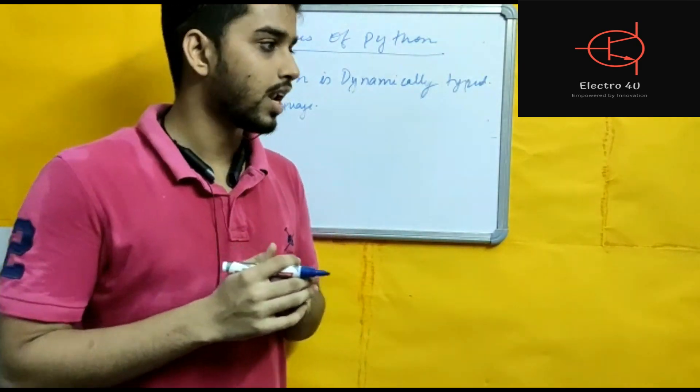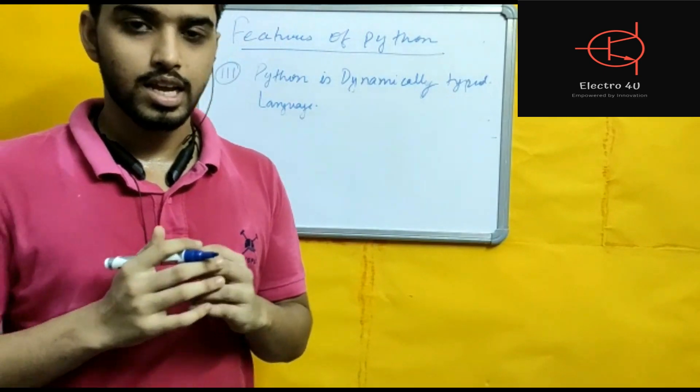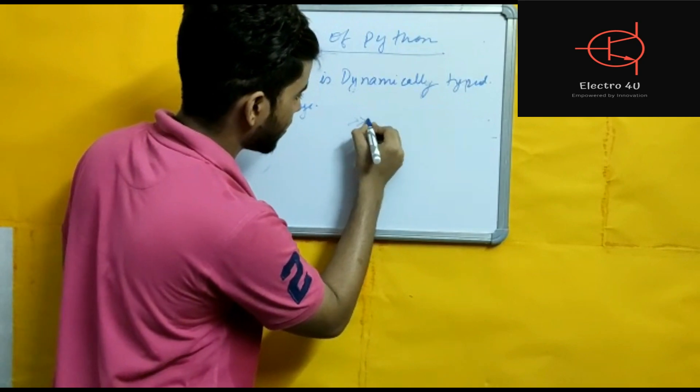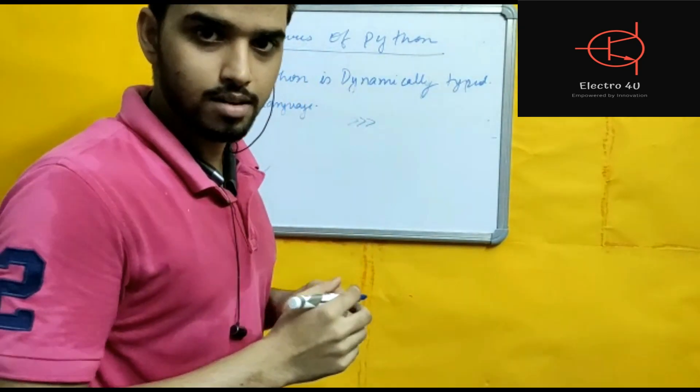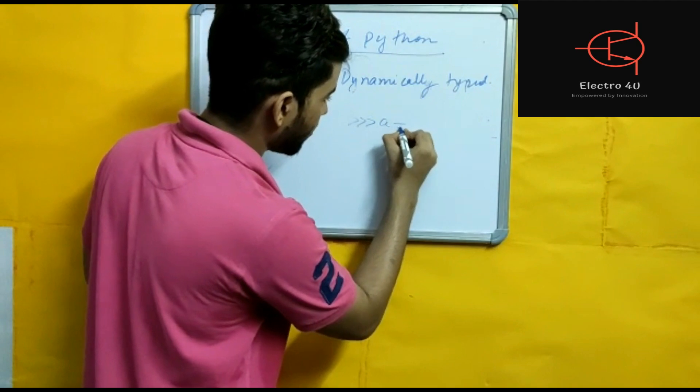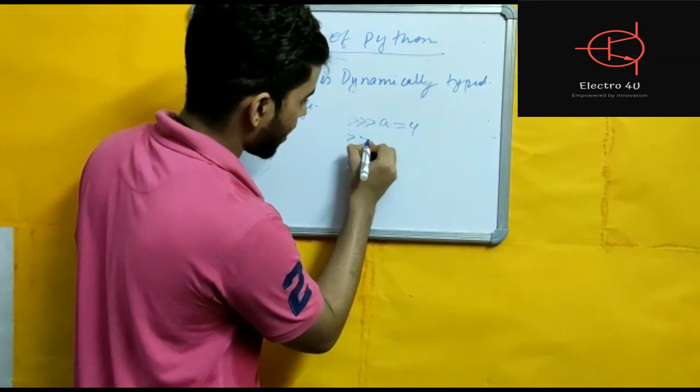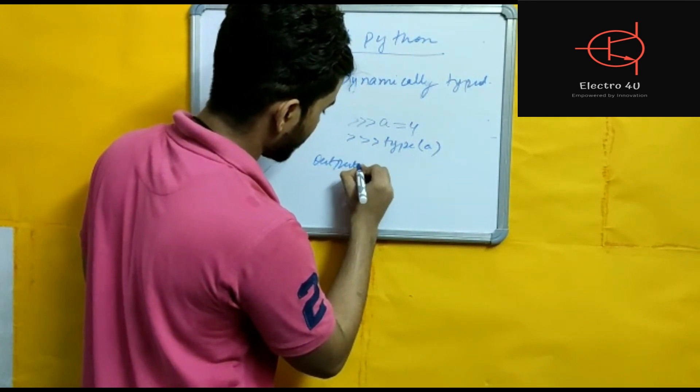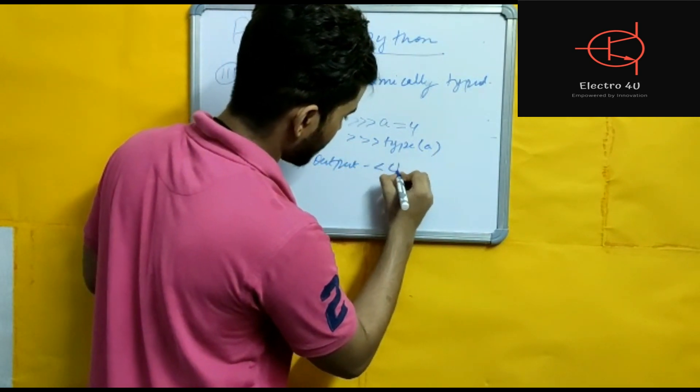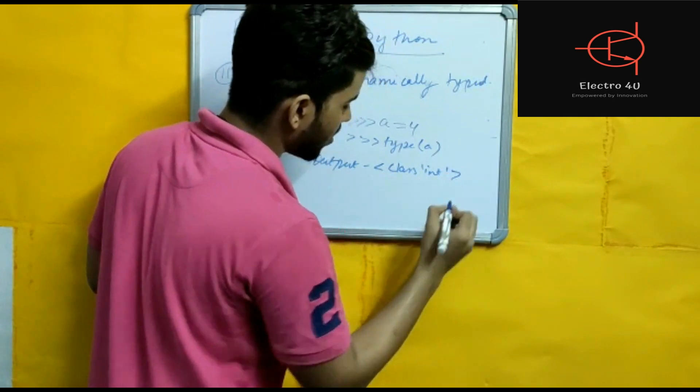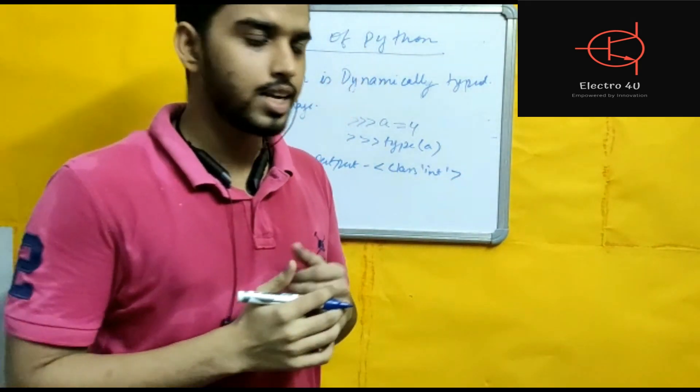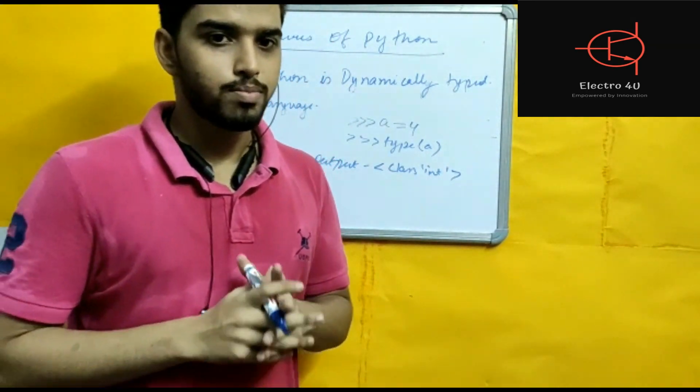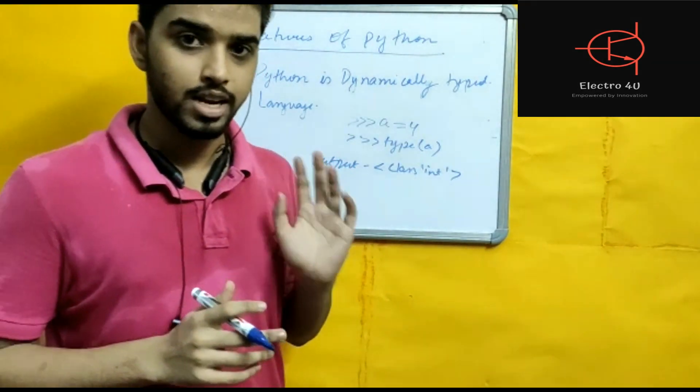The variable, we have to put the data types. Int is equal to 4, this is the example. This is the Python step type. A is equal to 4. Here type, this is the output: int. And automatically declare Python data types. Python is dynamically typed language, very important point.